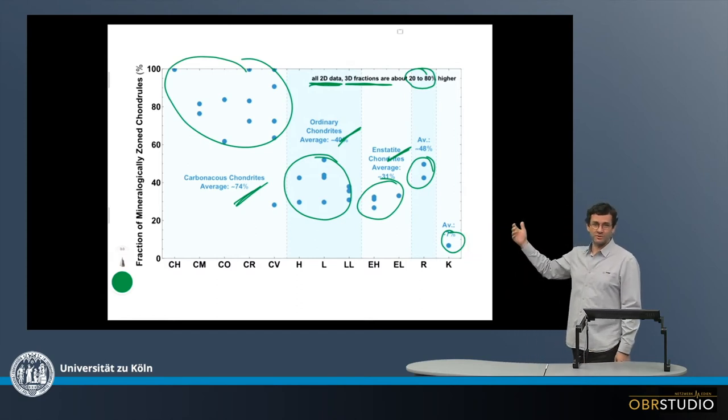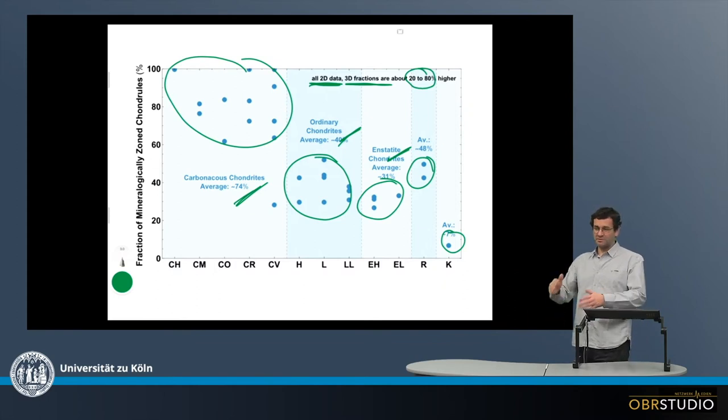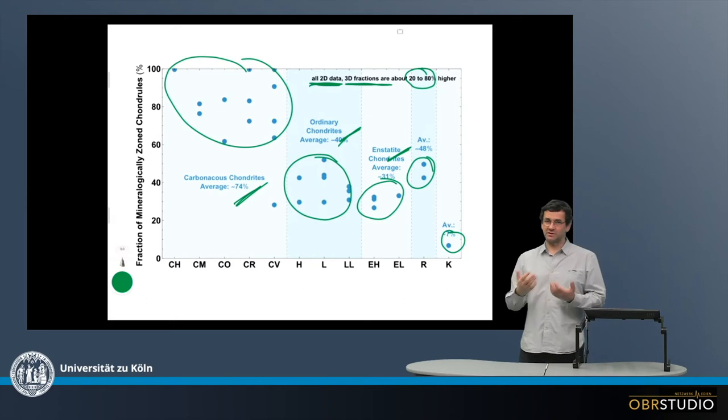And also about the chondrules that are not zoned and what these mean. This might be reheated zoned chondrules or another chondrule population. But with this kind of information we can learn a lot about chondrule formation and the reservoir in which they formed. Thank you.